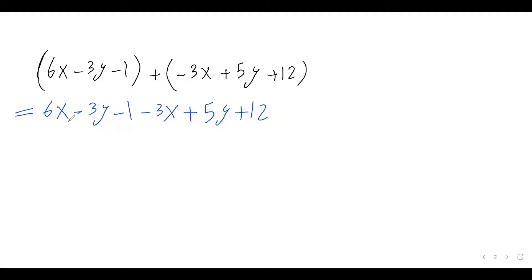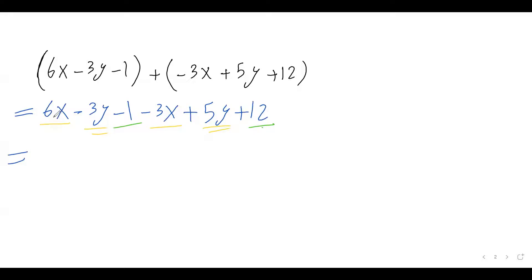So 6x and negative 3x are like terms because they have the same variable. If you're not comfortable with identifying like terms and how to add and subtract them, you can watch my other video — I'll put the link up here. So 6x and negative 3x: write the variable and subtract the coefficients, 6 minus 3 is 3, so it's 3x.